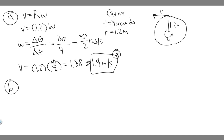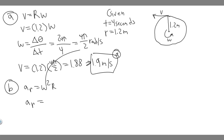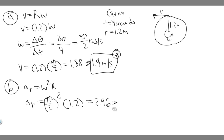Moving on to part B: what is her acceleration? They want the centripetal acceleration. The formula is A_R equals omega squared times R. We already know both values. So A_R equals (pi/2) squared times 1.2 meters. Plugging that in gives 2.96, which rounds to approximately 3.